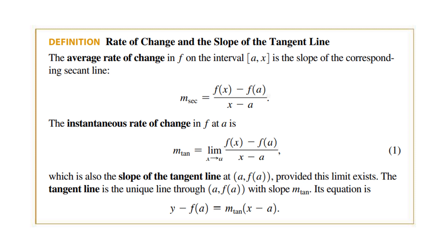Today we are going to be practicing finding slopes of tangents using the definition: the limit as x goes to a of f of x minus f of a over x minus a. And to find the equation of a tangent line, we will be using the formula y minus f of a equals m of tangent — which is the slope of the tangent — times x minus a.